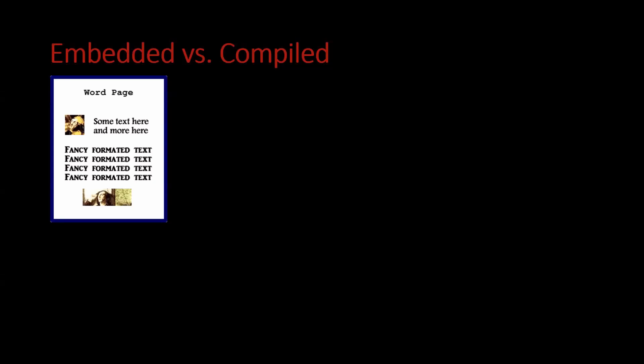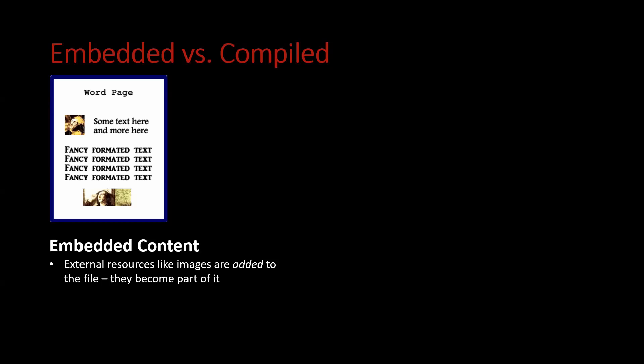A typical word processed file is an example of embedded content. What that means is when you have an external resource like an image, it's actually added to the file and becomes part of it. Multiple files are bound together into that single file — in this case, the example we're using, a single doc or docx file. A copy of those resources is created in Word, and sometimes multiple copies.